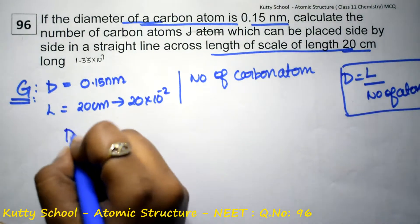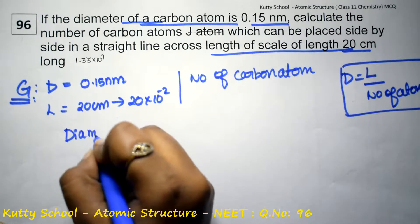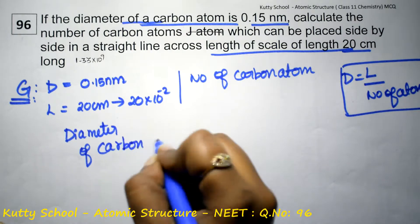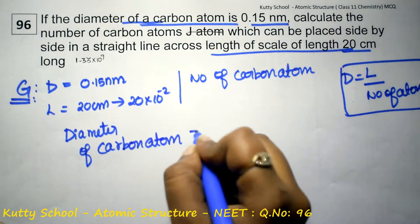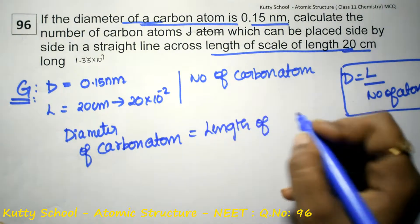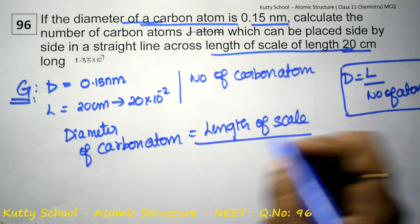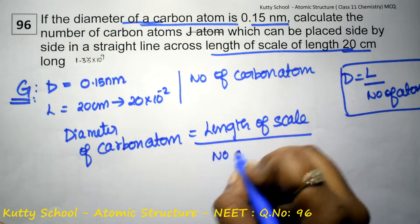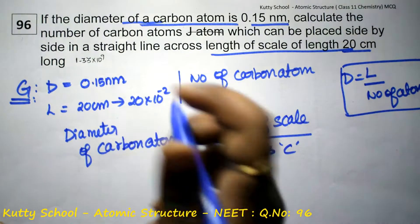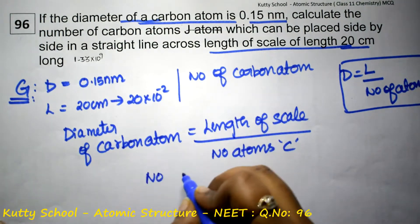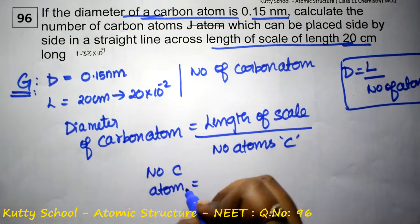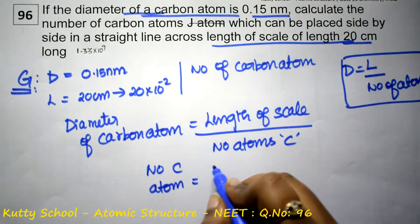So the diameter of the carbon atom is equal to length of scale by number of atoms. So number of carbon atoms is equal to length by diameter.